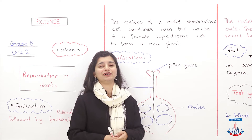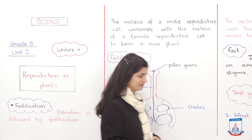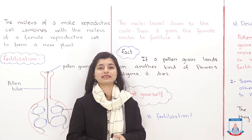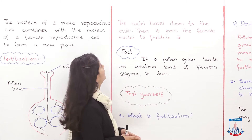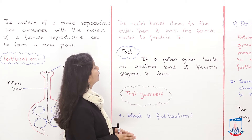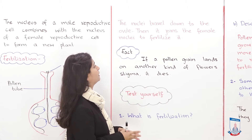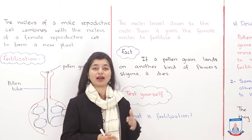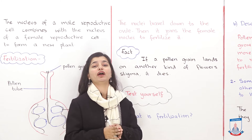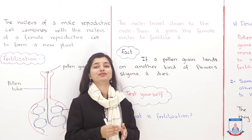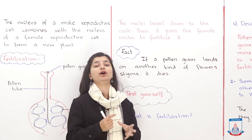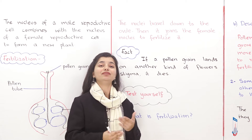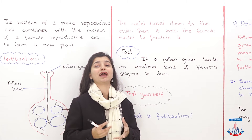Let's add some further details. The nuclei travel down to the ovule, then join the female nuclei to fertilize it. The nuclei traveled down, went to the ovule, fertilized it, and that is how a new seed is formed, and then a new plant eventually grows after the next processes, which we have to study.